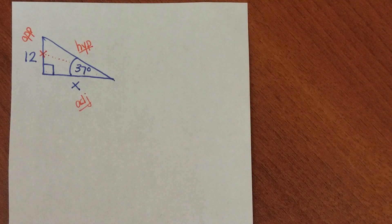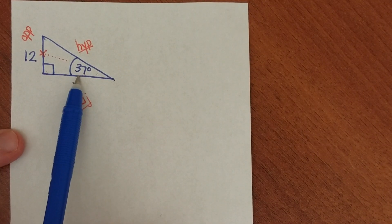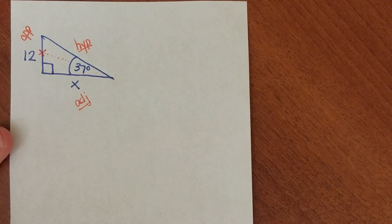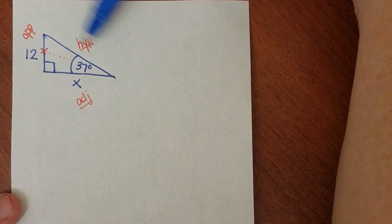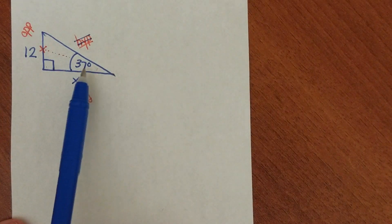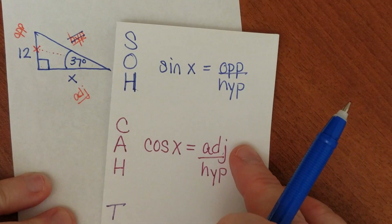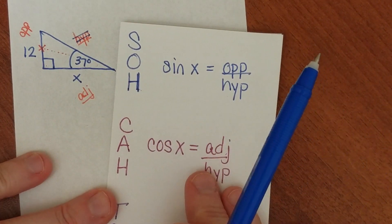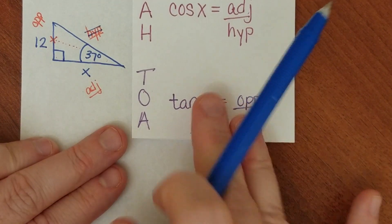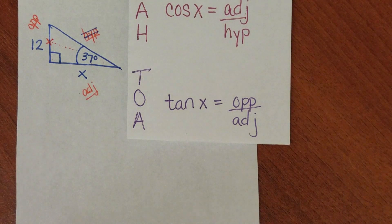So now I have to ask myself, which trig function relates an angle to its opposite side and its adjacent side? Because that's what's given here — they don't give me any information whatsoever for the hypotenuse, so I'm not going to use the hypotenuse in this example. Sine has opposite and hypotenuse. Cosine has adjacent and hypotenuse. Tangent has opposite and adjacent. So because opposite and adjacent are the two sides given to me, tangent is the trig function I'm going to use.